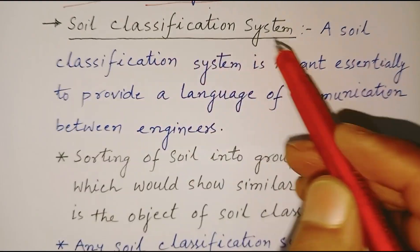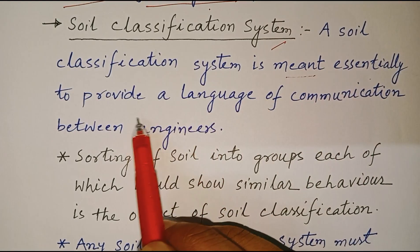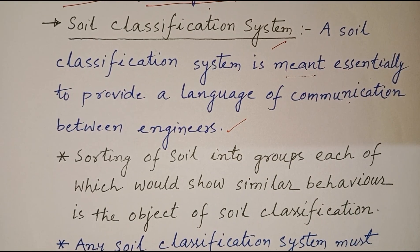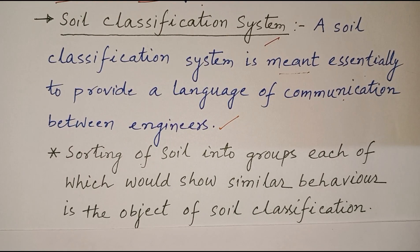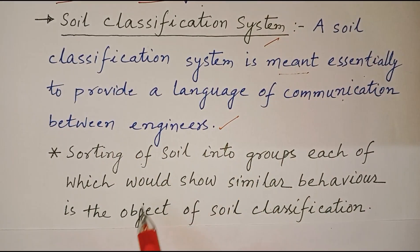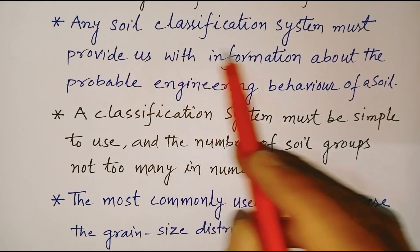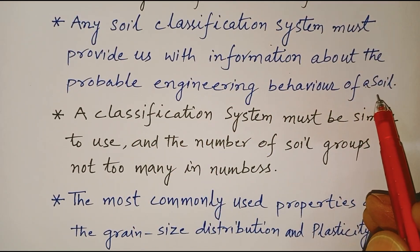Let us understand the meaning of soil classification system. A soil classification system is meant essentially to provide a language of communication between engineers. It may be considered a system of labeling soil which would convey the same meaning universally. The main objective of the soil classification system is sorting of soil into groups, each of which would show similar behavior. Any soil classification system must provide us with information about the probable engineering behavior of a soil.